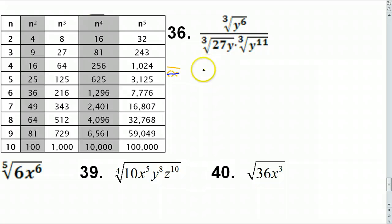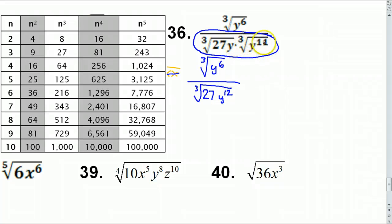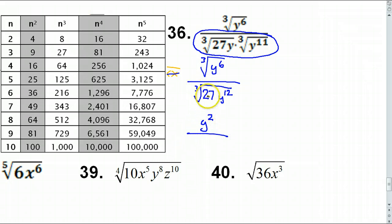Number 36: all roots are the same, so I can do the multiplication and division. For the denominator, multiplying gives the cube root of 27 times Y to the 12th (since Y to the 1 plus Y to the 11 is Y to the 12th). The numerator is the cube root of Y to the 6th. Simplify: Y to the 6th divided by 3 gives Y squared; cube root of 27 is 3; Y to the 12th divided by 3 gives Y to the 4th.